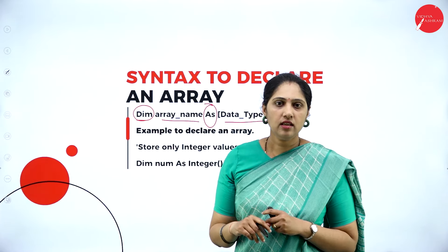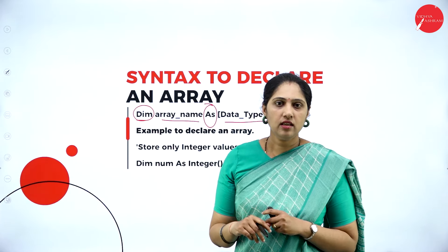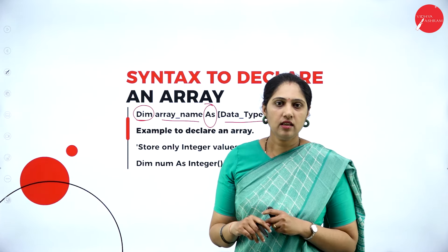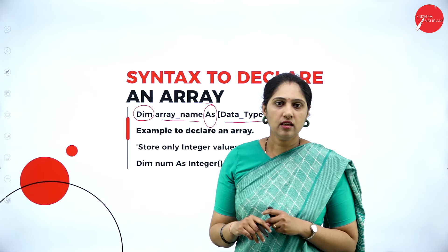If size is not specified: 'dim num() as integer.' If size is specified: 'dim num(5) as integer' — meaning 5 elements. Types of arrays in VB.NET: fixed size array, multidimensional array, jagged array, and dynamic size array. In a fixed size array, the size does not change during program execution — once declared as 10, it remains 10. If you want to change the size, go for a dynamic size array.